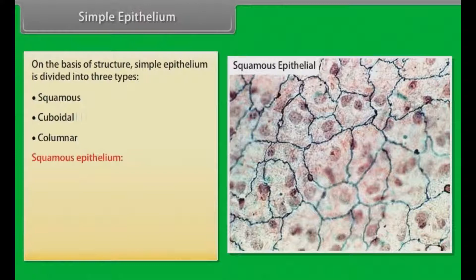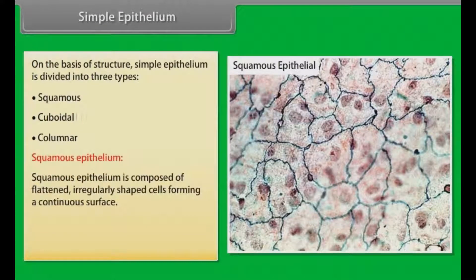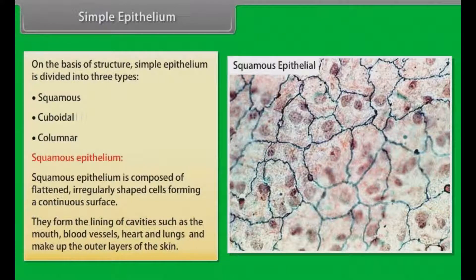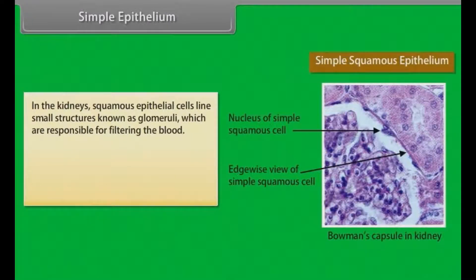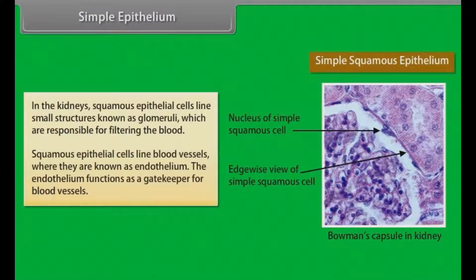Squamous epithelium. Squamous epithelium is composed of flattened, irregularly shaped cells forming a continuous surface. They form the lining of cavities such as the mouth, blood vessels, heart and lungs, and make up the outer layers of the skin. In the kidneys, squamous epithelial cells line small structures known as glomeruli, which are responsible for filtering the blood. Squamous epithelial cells line blood vessels, where they are known as endothelium, which functions as a gatekeeper for blood vessels.